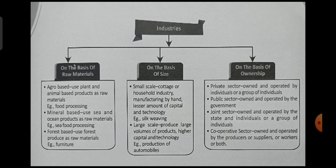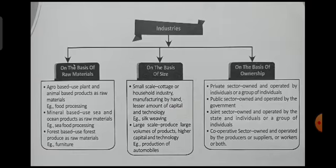The cooperative sector is owned and operated by the producers, suppliers, or workers, or both. The best example here is Amul Milk. Amul was started by Verghese Kurien, who is the father of the White Revolution and belongs to Gujarat. He first started the cooperative sector in the milk market.